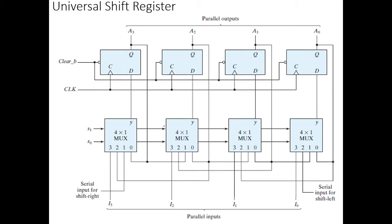This is the block diagram of the universal shift register. The circuit might look complex, but it is easy to understand and draw without memorizing. We are going to draw the circuit for a 4-bit register, so we will require 4 flip-flops. We are using D flip-flops. Draw 4 flip-flops, label the input D and the output Q. To differentiate the flip-flops, label them A0, A1, A2, and A3 — these are the parallel outputs. All the flip-flops are synchronized with a common clock, so draw the clock to drive all the flip-flops.